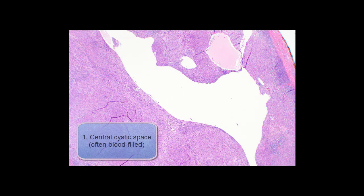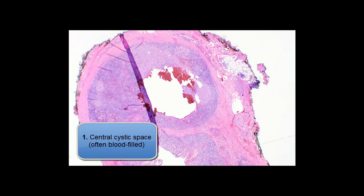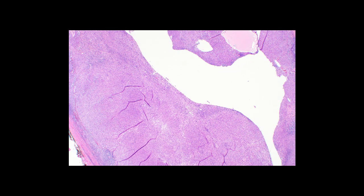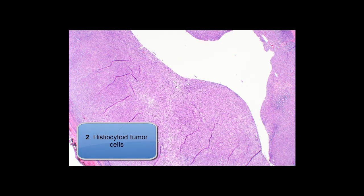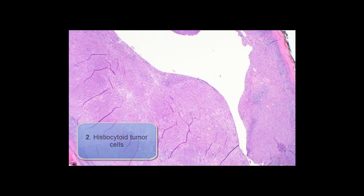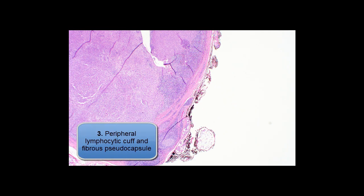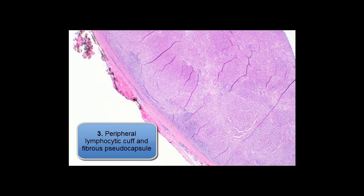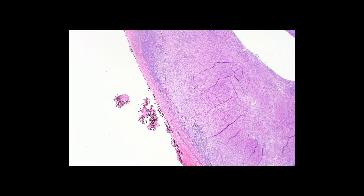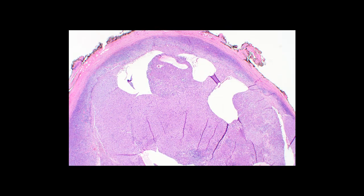From low power, these tumors have a very characteristic appearance. First, there is a central cystic space, often filled with blood. Second, there is a proliferation of histiocytoid tumor cells that form a sheet around these central cystic areas. And the third feature is at the periphery, there is a lymphocytic or lymphoplasmocytic cuff surrounded by a dense fibrous pseudocapsule, giving it a very distinct low power appearance.